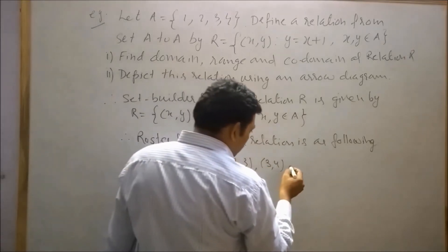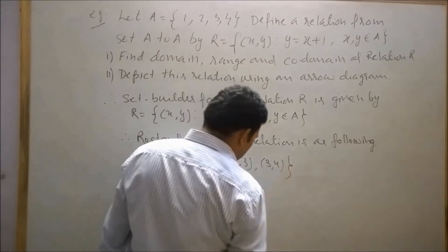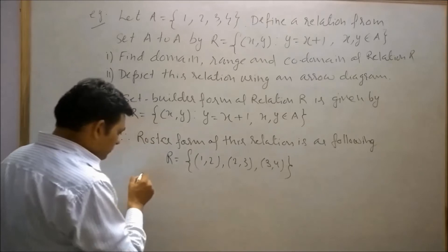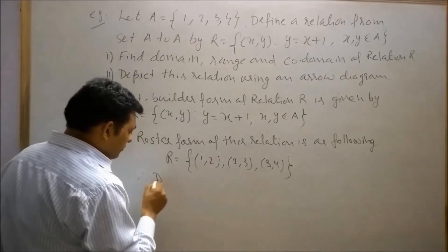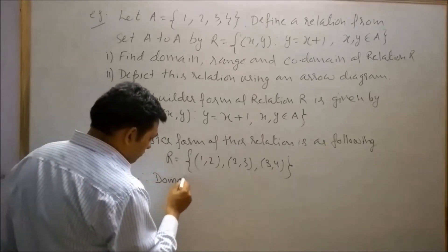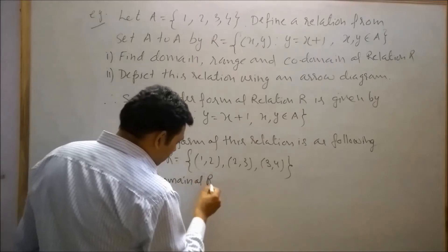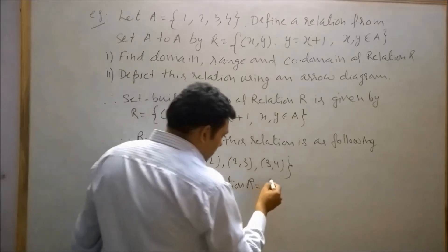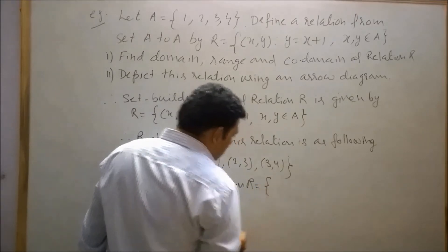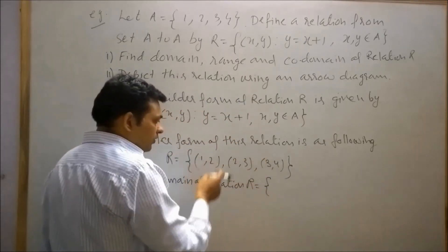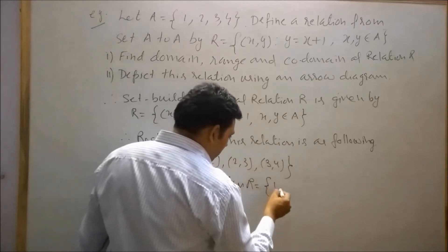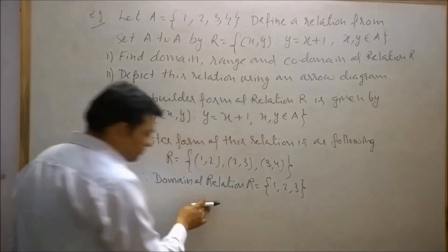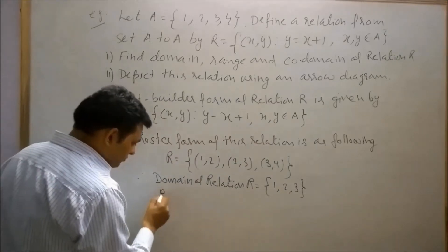Therefore domain of relation R is the set of first element of the ordered pair. Therefore 1, 2, and 3 is the domain of relation R.